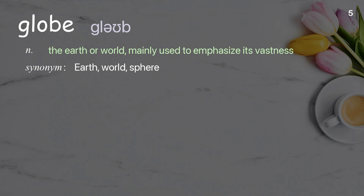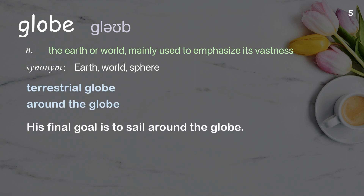Globe: the earth or world, mainly used to emphasize its vastness. Examples: terrestrial globe, around the globe. His final goal is to sail around the globe.